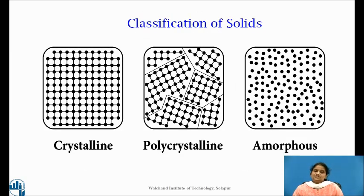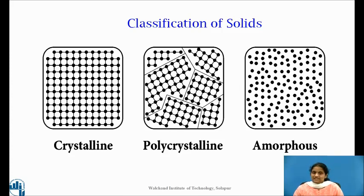Further, solids are classified into three categories based on atomic arrangement within the solid: single crystal, polycrystalline solids, and amorphous solids.